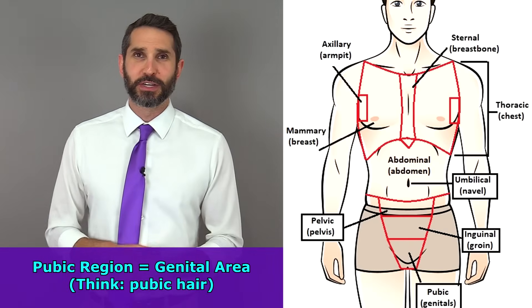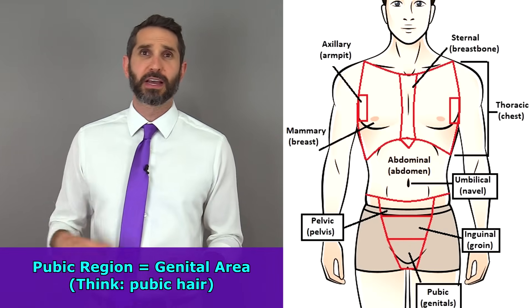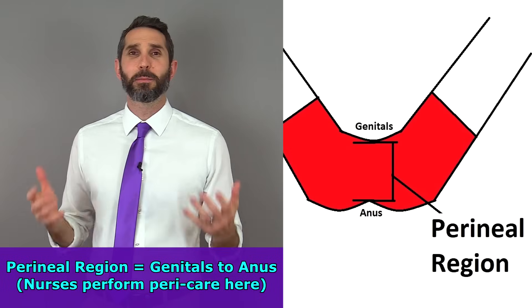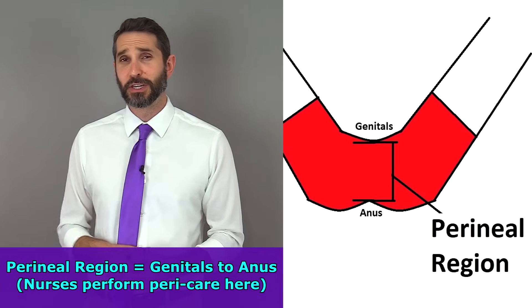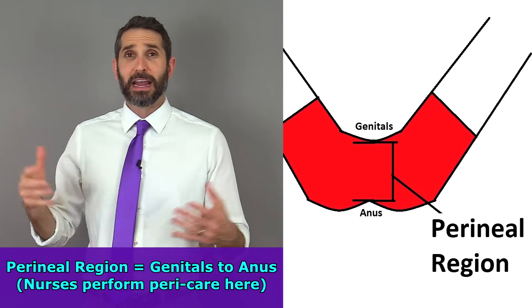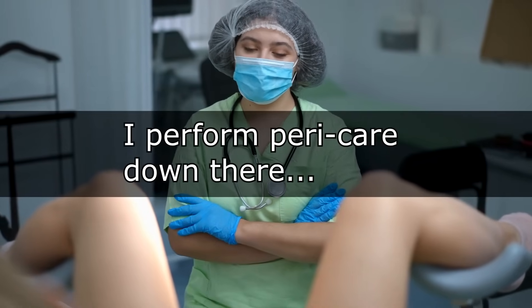The pubic region refers to your external genitalia area, where you develop pubic hair at puberty. The perineal region is that region between the genitalia and the anus. Nurses perform something called peri-care, where they clean and care for this area — always wipe from front to back, from the genitals to the anus. You don't want to wipe from the anus to the genitalia. That would be bad.